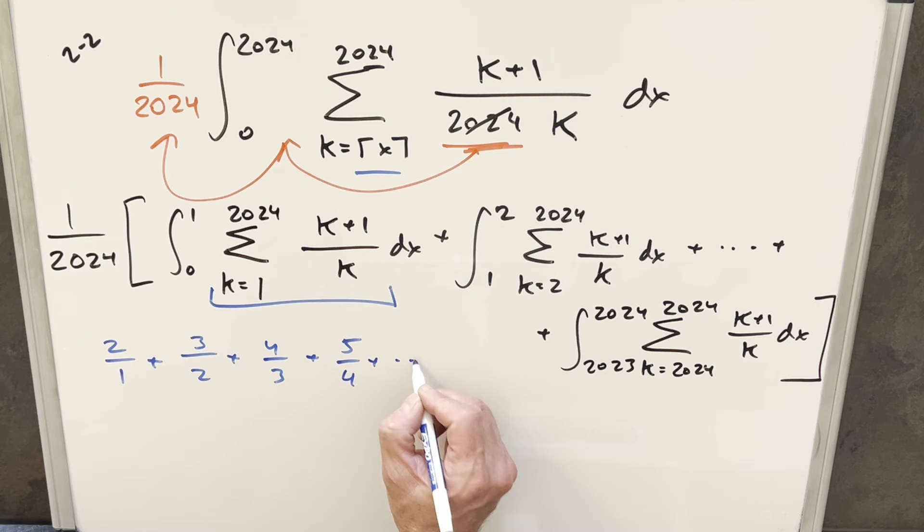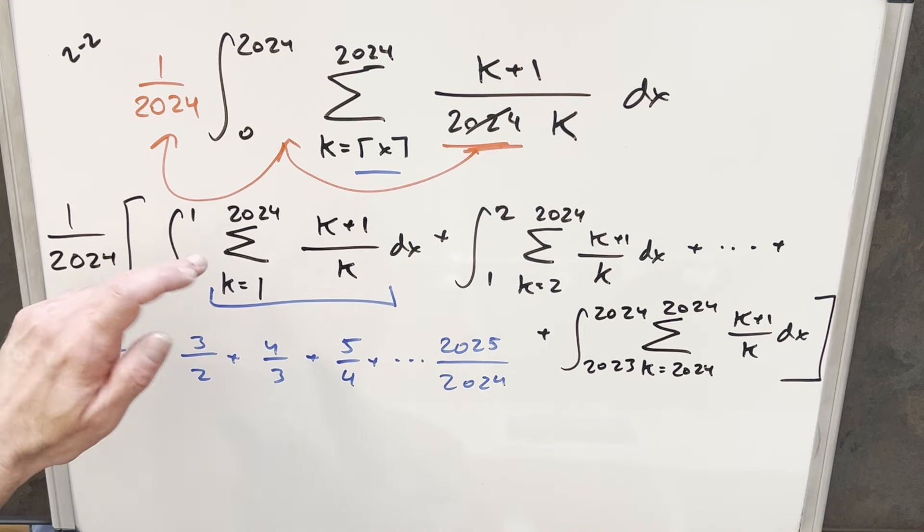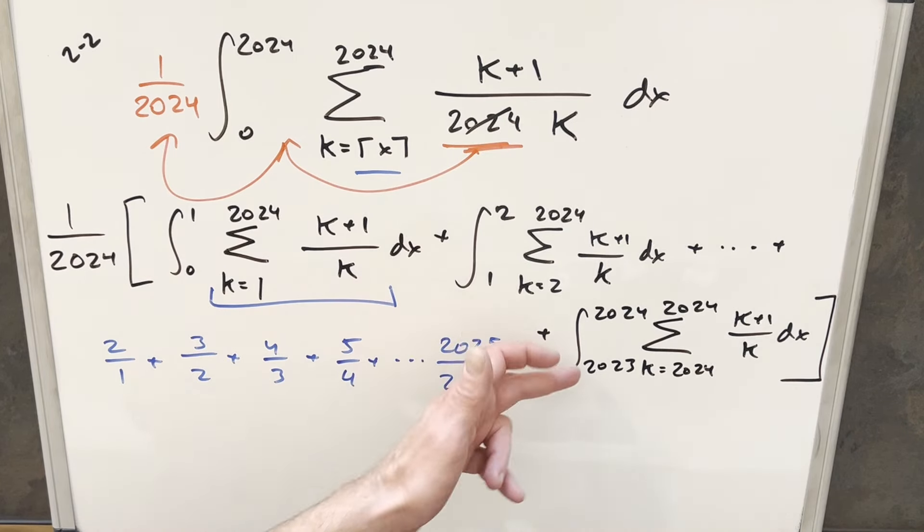And this is going to go all the way to our last term when k is 2024. This is going to be 2025 over 2024. Now at first, this was kind of hard to think about because we have this sum, but then we have something similar going on here. And then the next one, the next one, and we have 2024 of these. So it's actually a lot to look at.